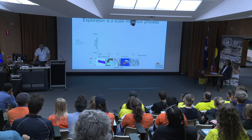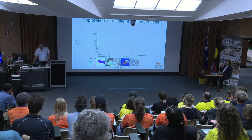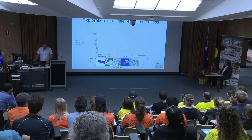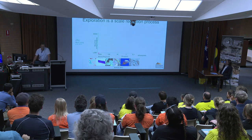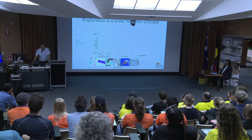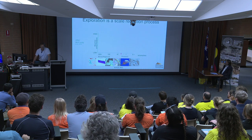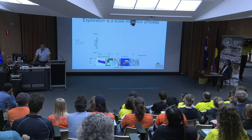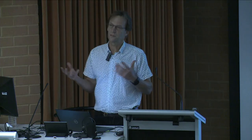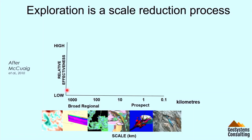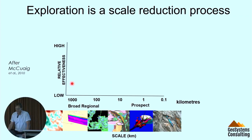We all know exploration is a scale reduction or a volume reduction process — going from the big scale, the continental, the province, the Cratons, into the district and all the way into the ore body. This is work from Cam McQuade illustrating this scale integration. We go from the broad regional, measured in kilometres, down to the deposit. On the y-axis we've got a notion of effectiveness. The two parameters I'm going to look at are prediction and detection — the two ways you go about exploration: you predict where you want to be and you ultimately try and detect the deposit.